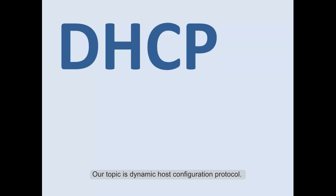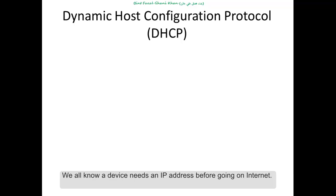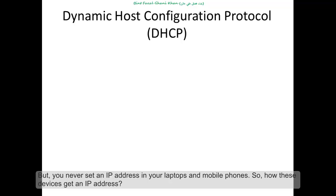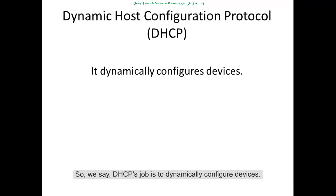Our topic is dynamic host configuration protocol. To understand the job of this protocol, we will take an example of a home network scenario. We all know a device needs an IP address before going on the internet, but you never set an IP address in your laptops and mobile phones. When your device comes into a home network, your home router sends an IP address to it. This is possible because dynamic host configuration protocol is running in your home router. So we say DHCP's job is to dynamically configure devices.